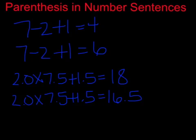This first one is equal to 4, but the second one is equal to 6, while this first one is equal to 18, and this second one is equal to 16.5. And they are all true sentences. But how is that possible? Let's talk about how this works.